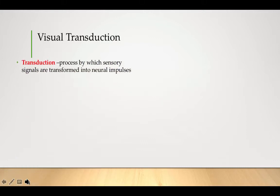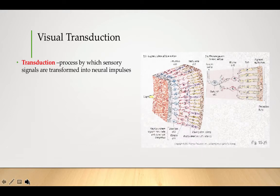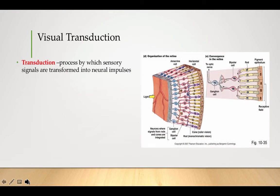So as we talk about visual transduction, remember this is a very important term in this unit. You really have to know this term and be able to explain it. This is the process by which sensory signals or stimulus energy from the outside world are transformed, transferred, or translated into a neural impulse that the brain can read and make sense of.